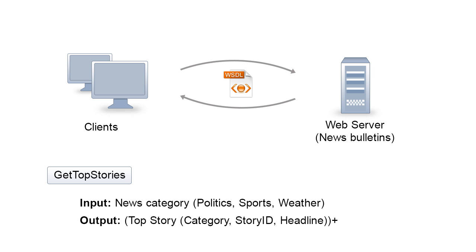Our test server offers two operations. The first one is getTopStories, which returns breaking news depending on a given news category. Its operation input is a specific news category, and its output is a sequence of objects containing information about a story, like category, story ID, and the story headline.